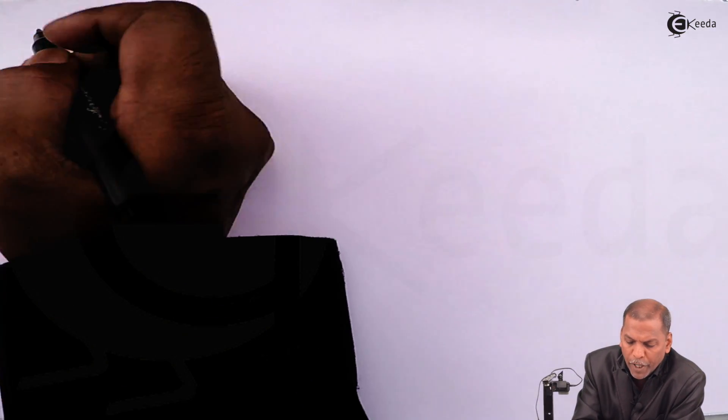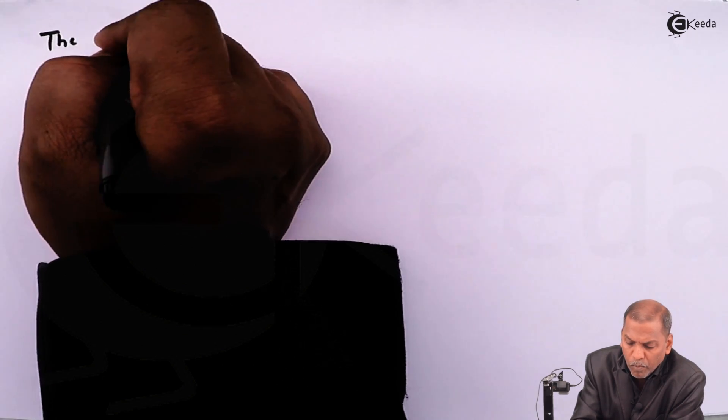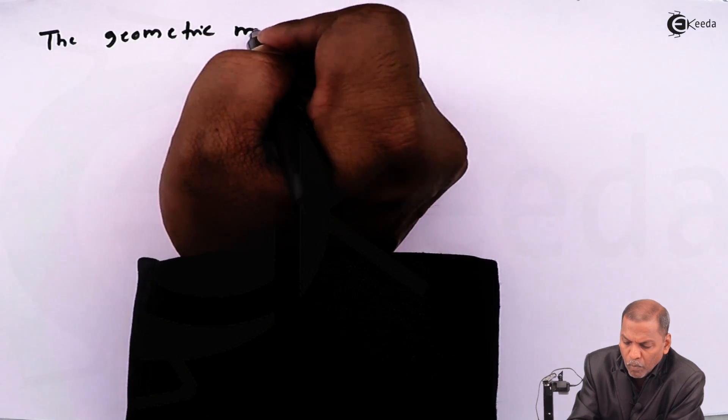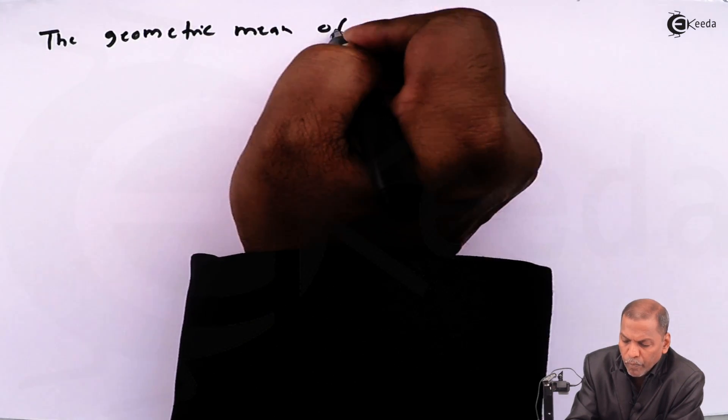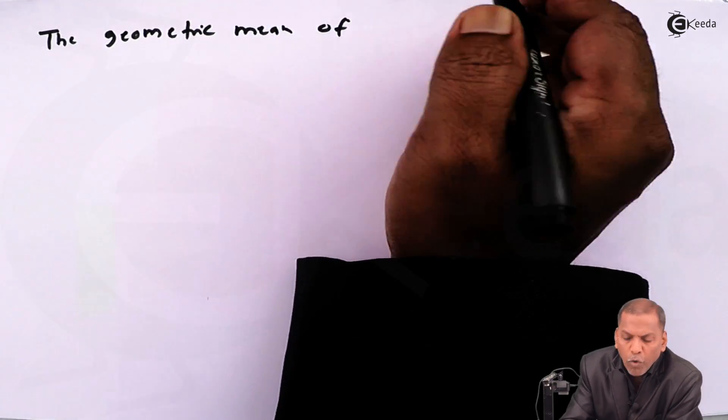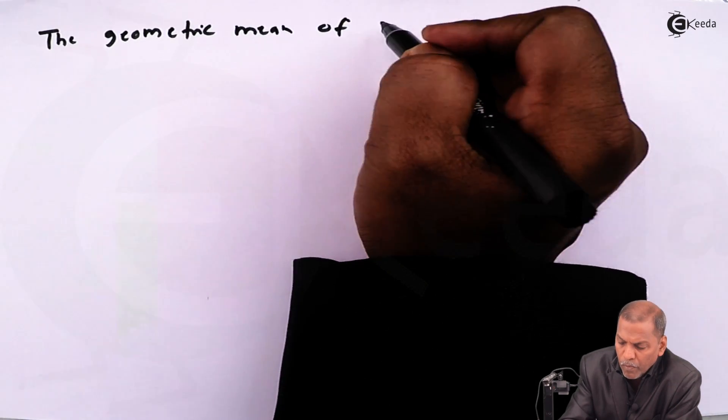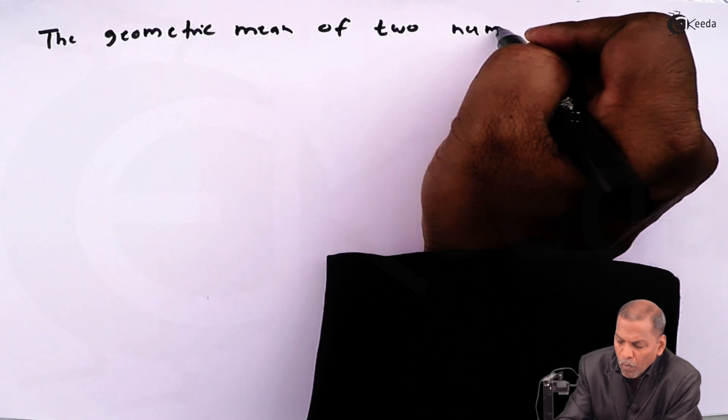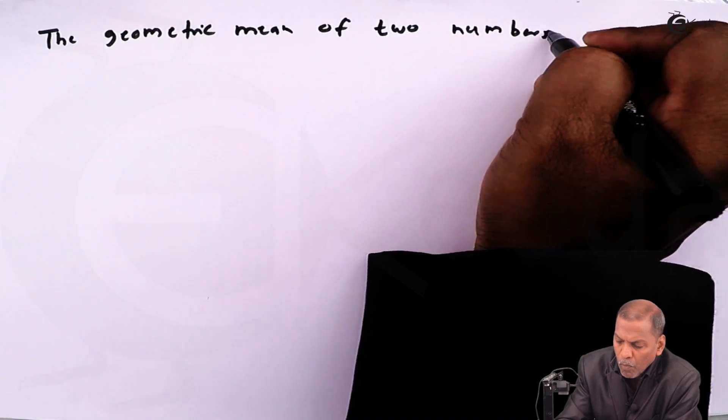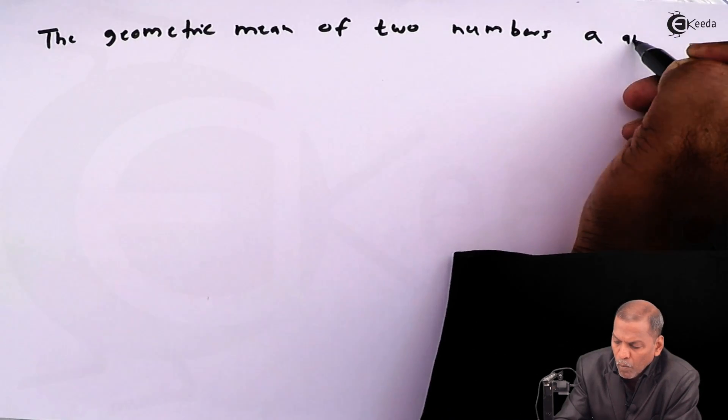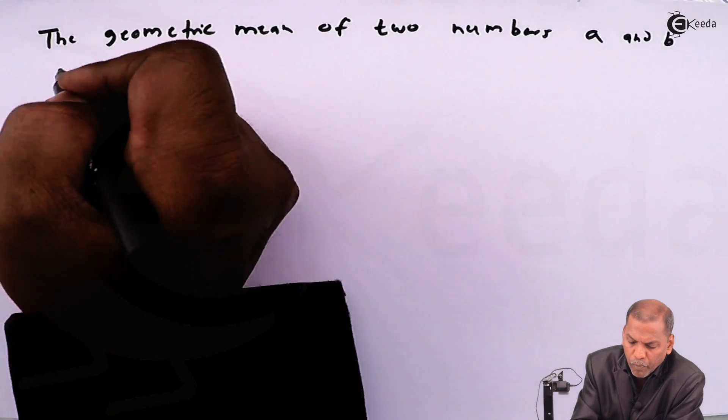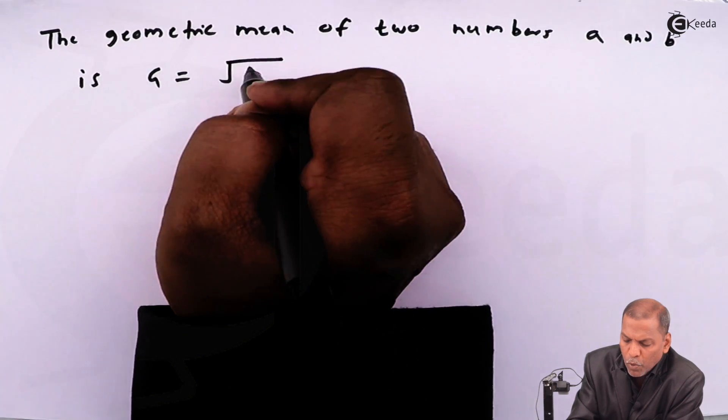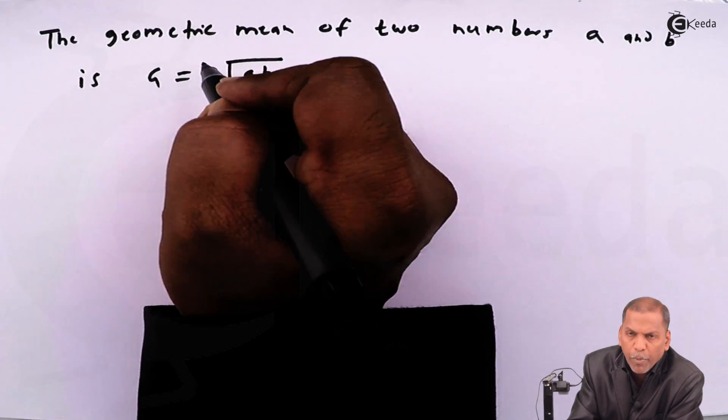So finally, the geometric mean of two numbers a and b is G = √(ab).